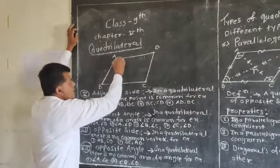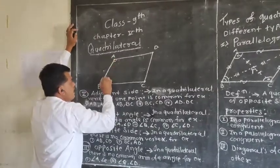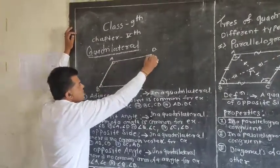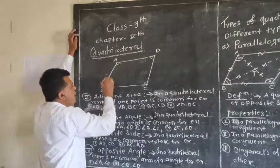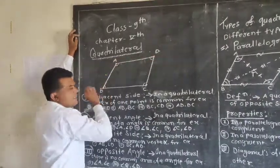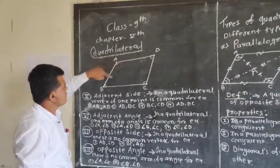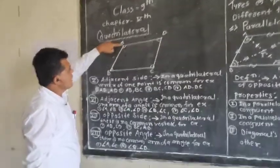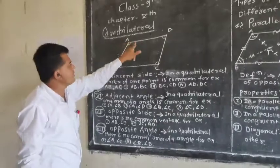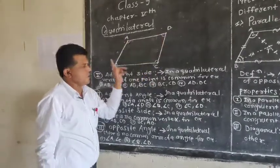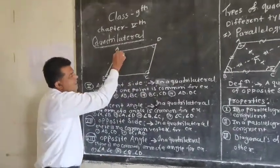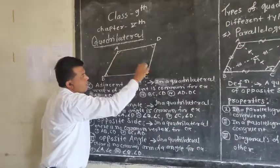Angle A can be named in three words as BAD or DAB. Similarly, angle B is named ABC or CBA, and angle C is named BCD. In this way, each angle has a side and a diagonal associated with it.